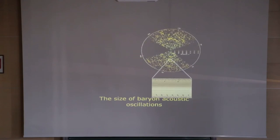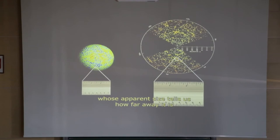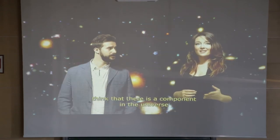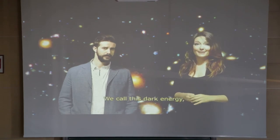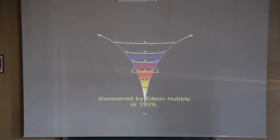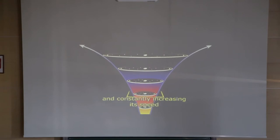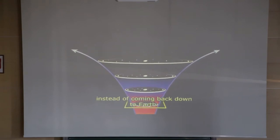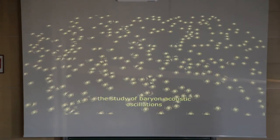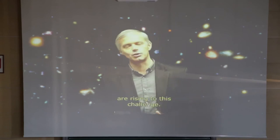The size of the baryonic acoustic oscillations is a ruler we can use to measure the universe. A ruler is an object of known size whose apparent size tells us how far away it is, and thus reveals the rate at which the universe is expanding. This is relevant because cosmologists believe the universe contains a component that is neither matter nor radiation - what we call dark energy - which causes the cosmic expansion to accelerate. The study of baryonic acoustic oscillations provides information to understand the nature of dark energy, and many international research projects are dedicated to this challenge.